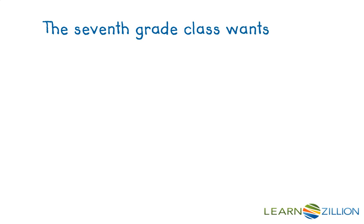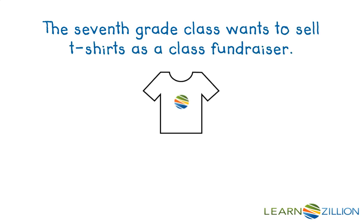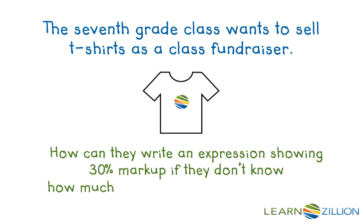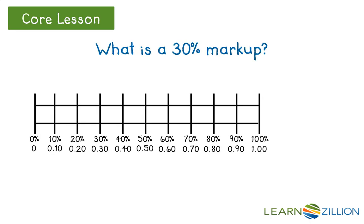The 7th grade wants to sell t-shirts as a class fundraiser. How can they write an expression showing a 30 percent markup if they don't know how much it will cost to make each t-shirt? Since they don't know the cost of each t-shirt yet, they will use an X to represent the cost of each shirt.